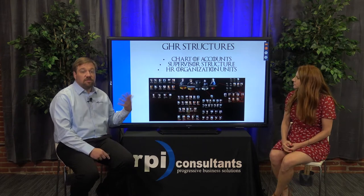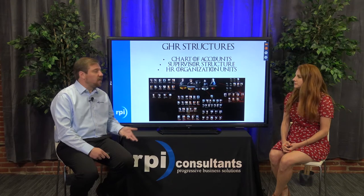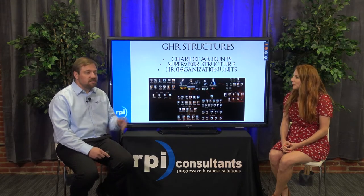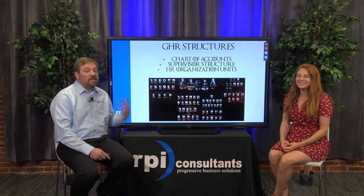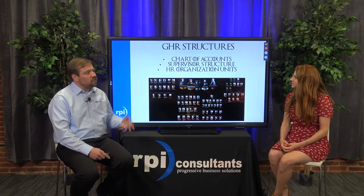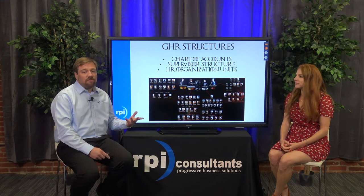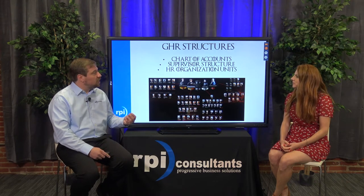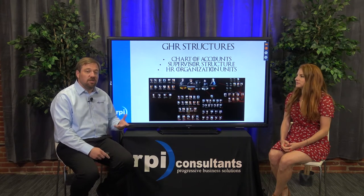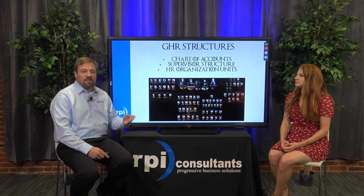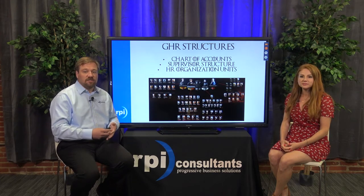Now when we get to the GHR side, we've got a lot of the same kind of components. We still have our chart of accounts or cost centers, although they're starting to phase that out slowly but surely. We do have our supervisory structure as well, which we're kind of used to — it's still tried and true with a little more functionality behind it. But then we move into this whole concept of organization units rather than the traditional process-level department relationship we're very used to in the S3 world.